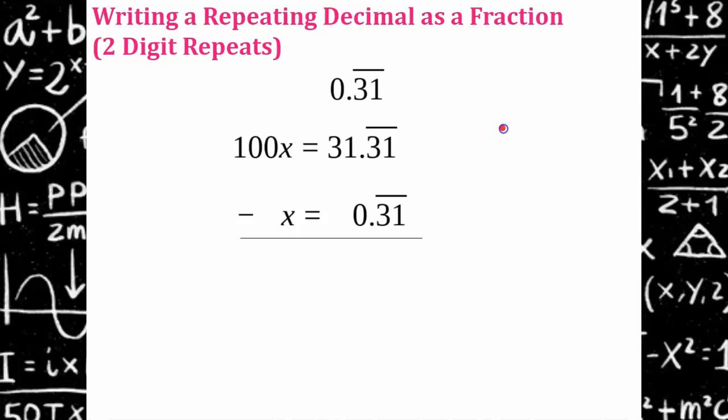Go ahead and subtract. Now we're going to have 99x. 100x minus x is 99x. 31 point 31 repeating subtract point 31 repeating is 31. Divide both sides by 99. And x equals 31 99ths.